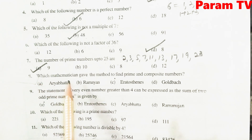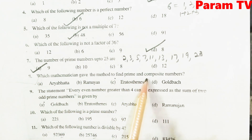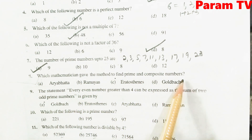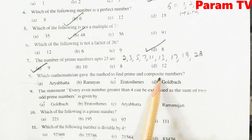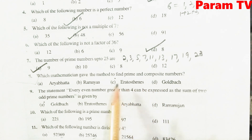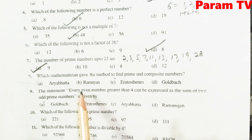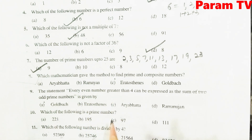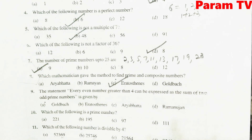Which mathematician gave the method to find prime and composite numbers? कौन सा mathematician था जिन्होंने prime और composite numbers का concept दिया? ये chapter की introduction में दिया हुआ है — C is the right option.